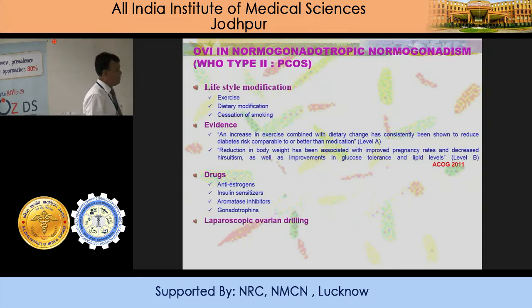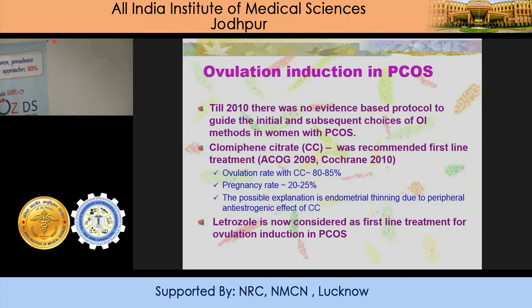The drugs we are going to discuss are aromatase inhibitors, gonadotropins, and laparoscopic ovarian drilling, which is surgical induction of ovulation. Based on evidence-based medicine, until 2010 there was no evidence-based protocol to guide the initial and subsequent choices of ovulation induction.